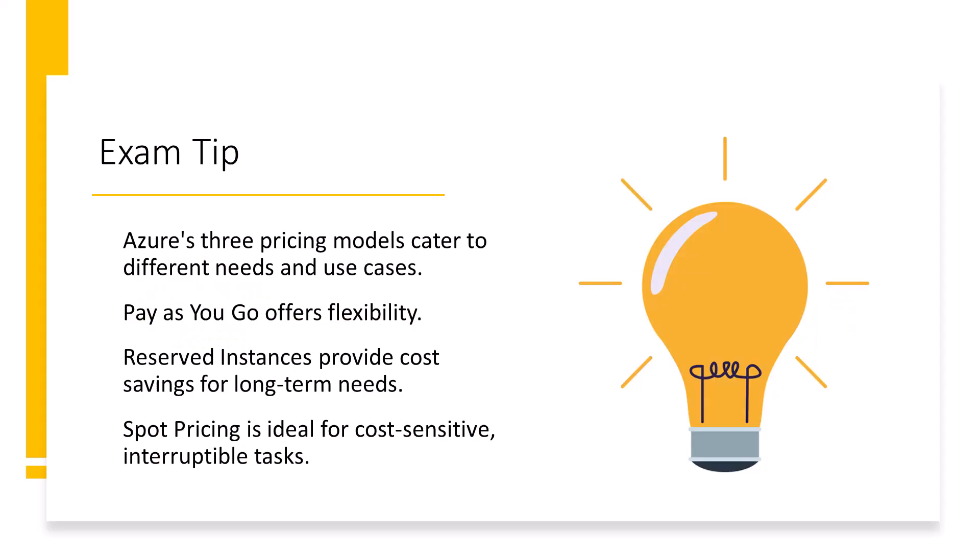So take away from this lecture that there are three different pricing models available. You have pay-as-you-go, which offers flexibility. You have reserved instances, which provide cost savings for long-term needs. And then you have spot pricing, which is ideal for cost-sensitive, interruptible tasks. By understanding these different models, you can make more informed decisions that align with your goals and budget.